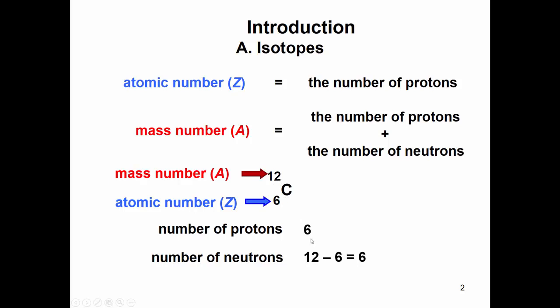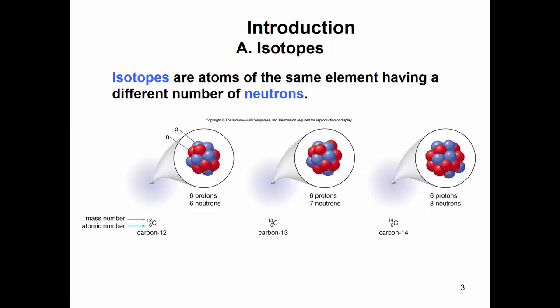So isotopes are atoms of the same element that have a different number of neutrons. If we had carbon-14, then we would have eight neutrons and six protons. But all the way across, an isotope has to be the same element symbol and it has the same number of protons. The only difference is the number of neutrons.